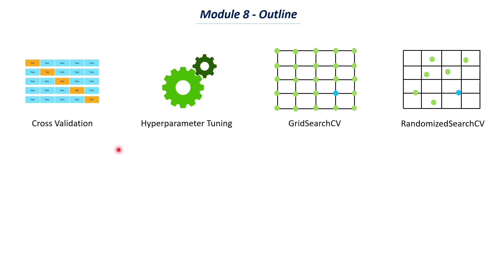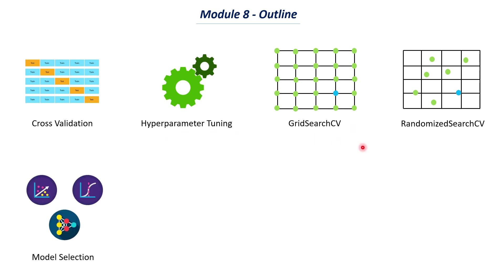This will be the structure of the upcoming videos in this module. Once we complete cross validation, hyperparameter tuning, grid search CV, and randomized search CV, we will discuss how to select models. The next topic will be on model selection — again covered both conceptually and with hands-on coding — where we will try to select the best model suitable for a particular problem.